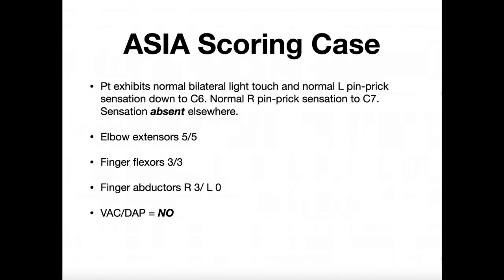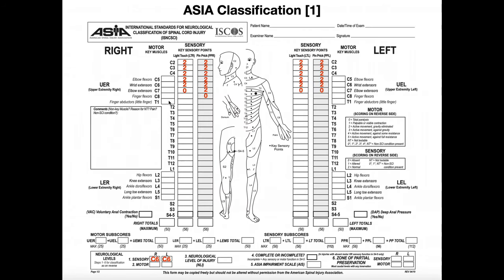We're now going to progress to the motor parts. There are defined myotomes we have to use. The myotomes used are shown under the motor headings — C5 through T1, and then L2 to S1. Notice there are no clinically testable myotomes between T2 and L1, from C2 to C4, and below S1. That will lead to some considerations we'll cover in the next video.